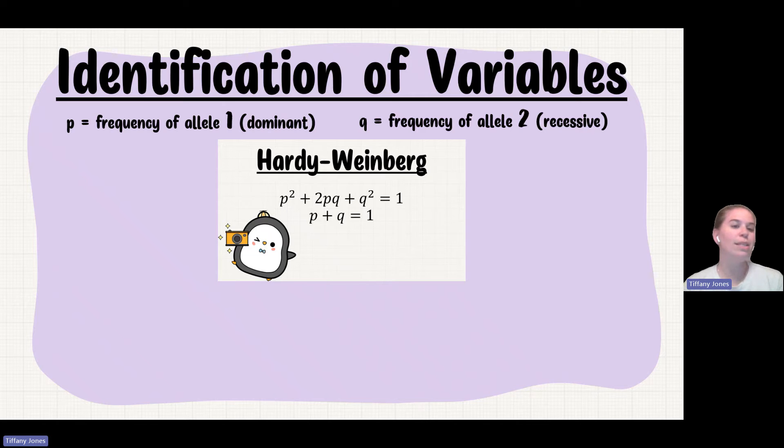Okay, now again, notice that the P is a single, it's just one P and it's just one Q. So that's just meaning that we have a single allele. So if they ask you the frequency of this certain allele, then that's where you're gonna be using your P or your Q.